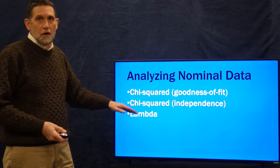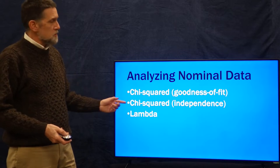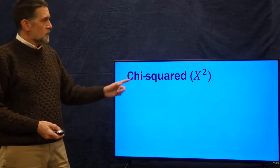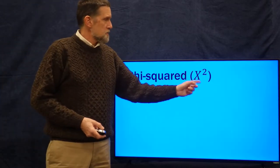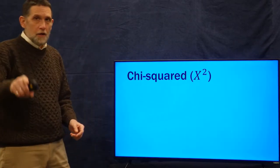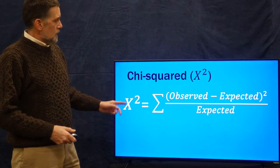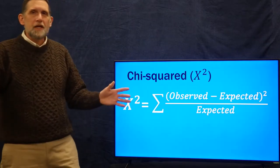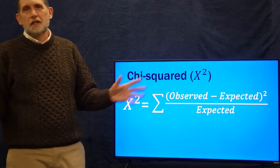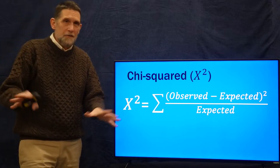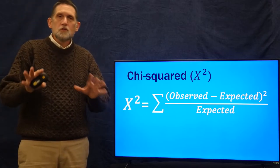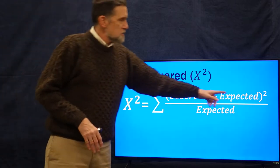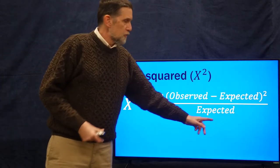I'm going to start talking about chi-squared, and we're actually going to start with chi-squared for independence. Here's chi-squared — it's the Greek letter chi, squared. There's a formula. Chi-squared is the sum of observed minus expected, squared, over expected. We'll talk about expected values in just a minute.